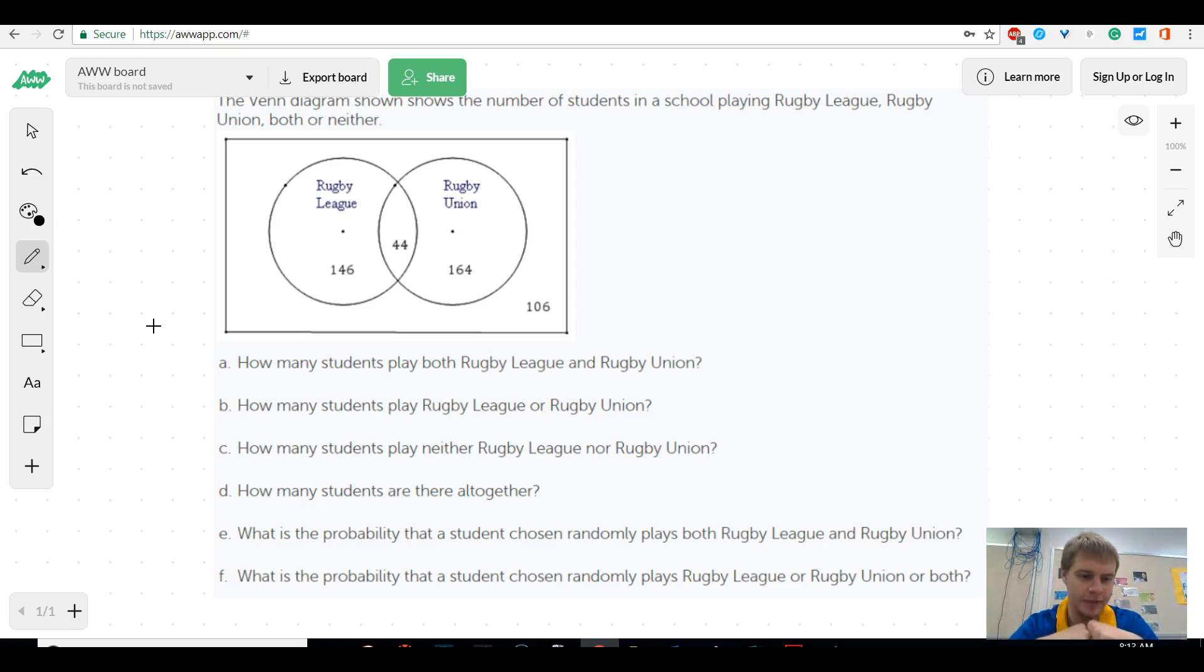We're going to answer these questions based off of this Venn diagram, and you probably have a similar first question. So let's just try it. It says how many students play both rugby league and rugby union. We can see from this circle, this is the rugby league, and this is all the people that play in the rugby union. So the overlap is the amount that play in both. So that for us would be 44. So that was not too bad.